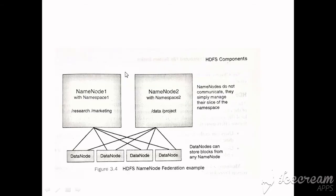Here is a simple example of HDFS name node federation. In this example we have two name nodes — name node 1 and name node 2 — each having its own namespace. Name node 1 has namespace 1 and name node 2 has namespace 2. These two name nodes are independent of each other; they do not communicate and only manage their respective namespaces.